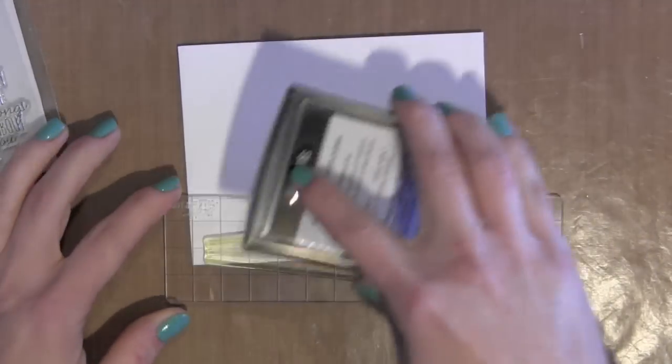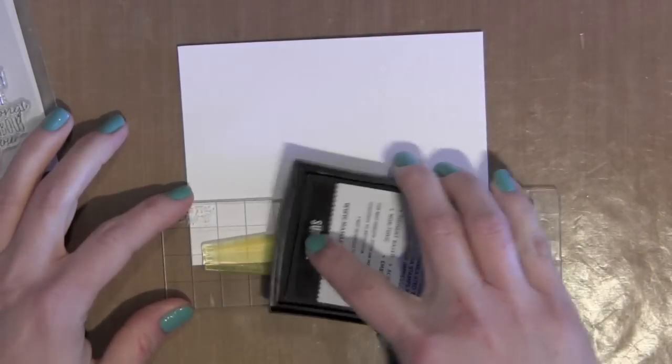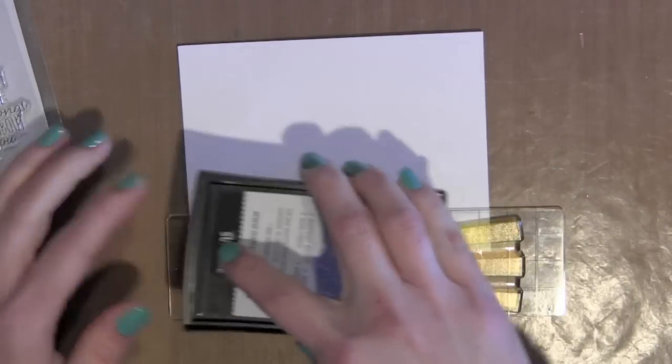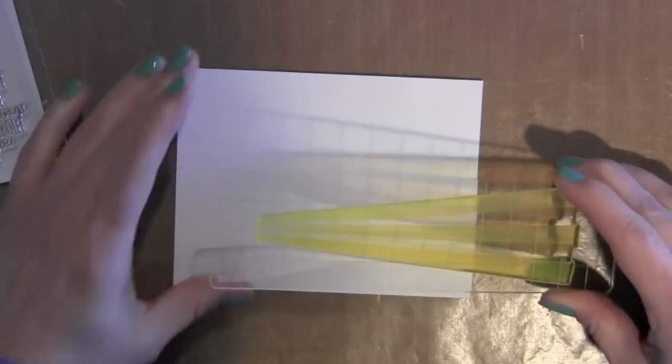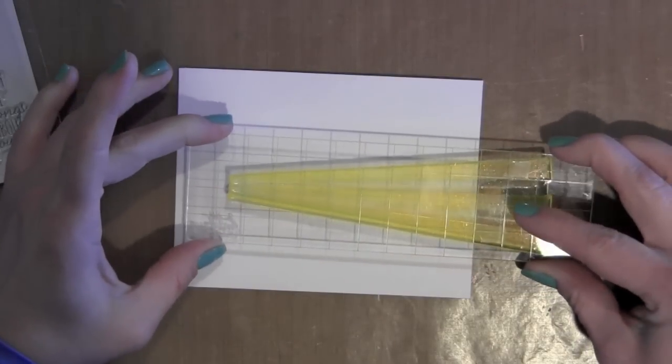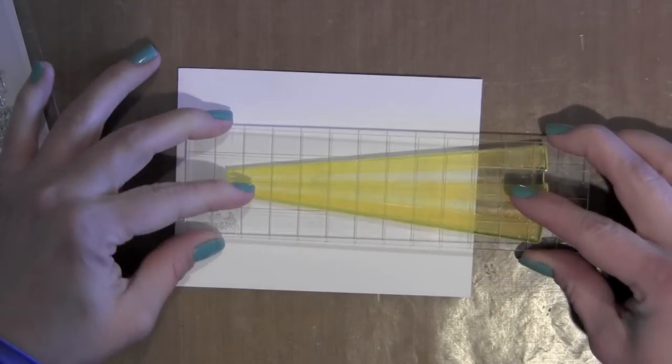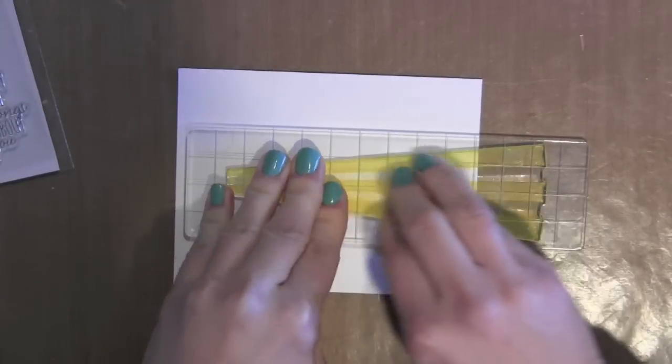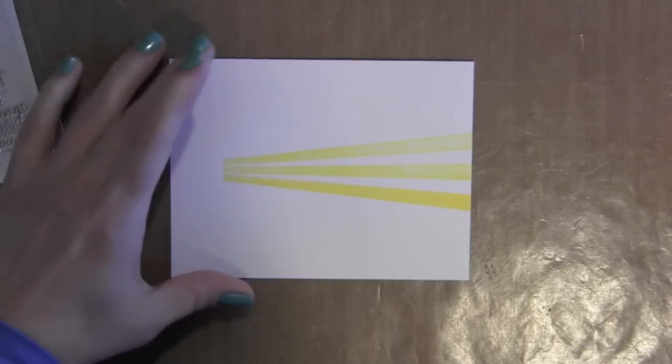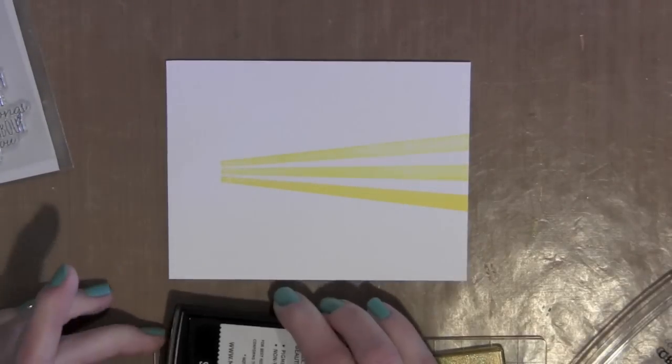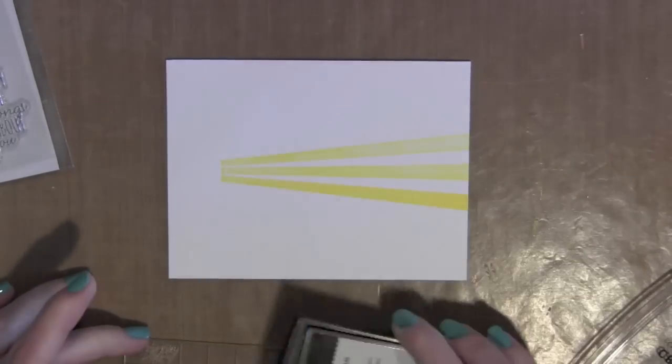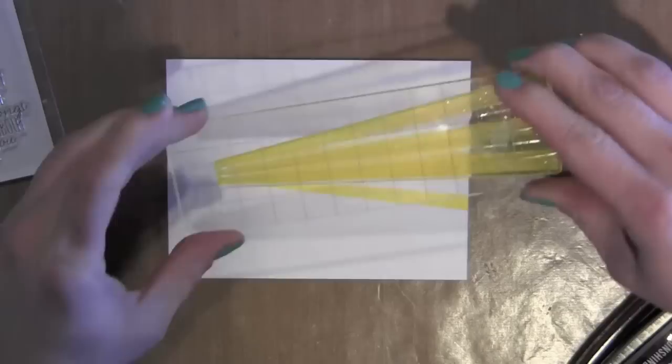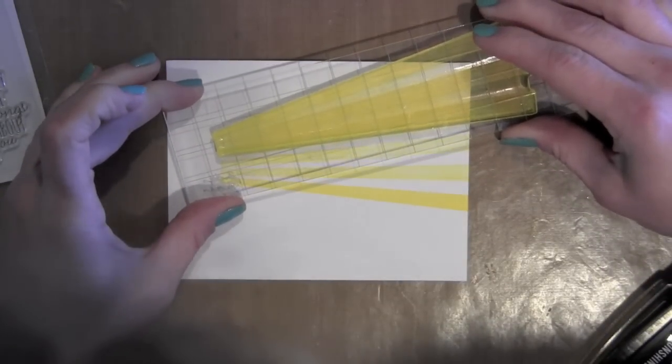So what I did first was I cut down a piece of cardstock slightly smaller than the front of a standard card and I'm going to take the sun rays from the Sunny Skies stamp set and I'm inking them up with some of the Sunshine Mama Elephant ink and I'm just going to stamp the sun rays all along my card like you see here.